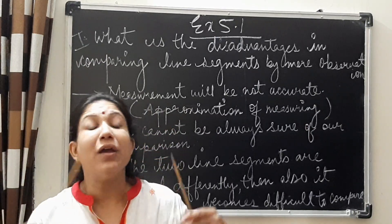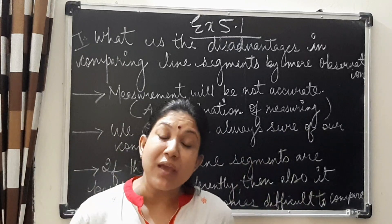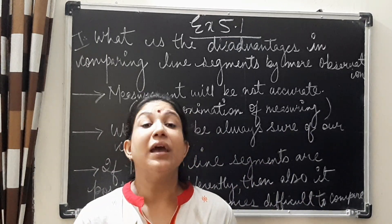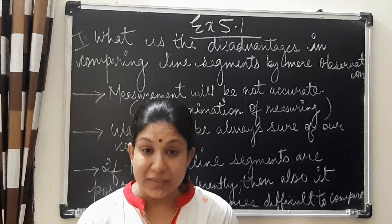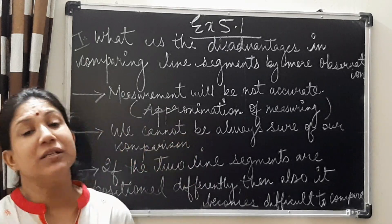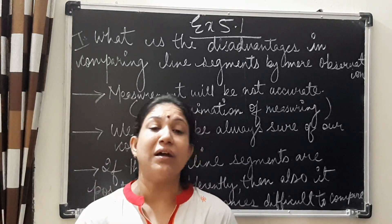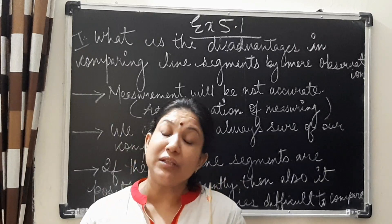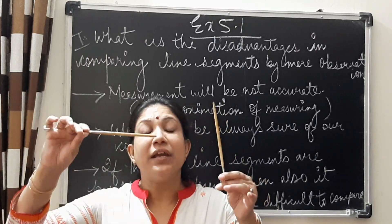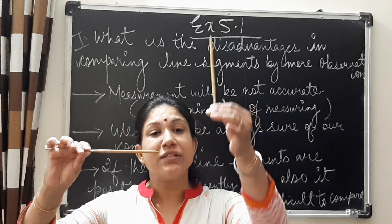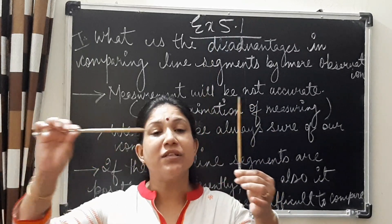Got it? So by observation, we may make mistake. There may be errors in our comparison. Then, the third case is, suppose the two line segments are given, but now in the third case, if they are given in different forms, this is vertically straight and this is put horizontally.